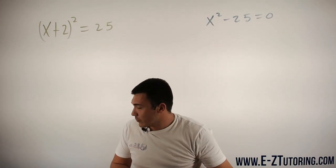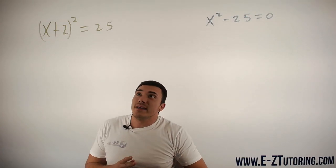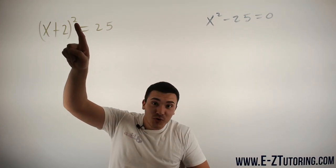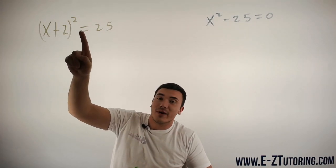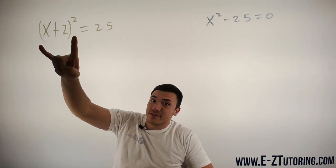So the way the square root property works is you want to get your square, whatever your square may be—whether it be x² or (x+2)²—you want to get it by itself on the left side.